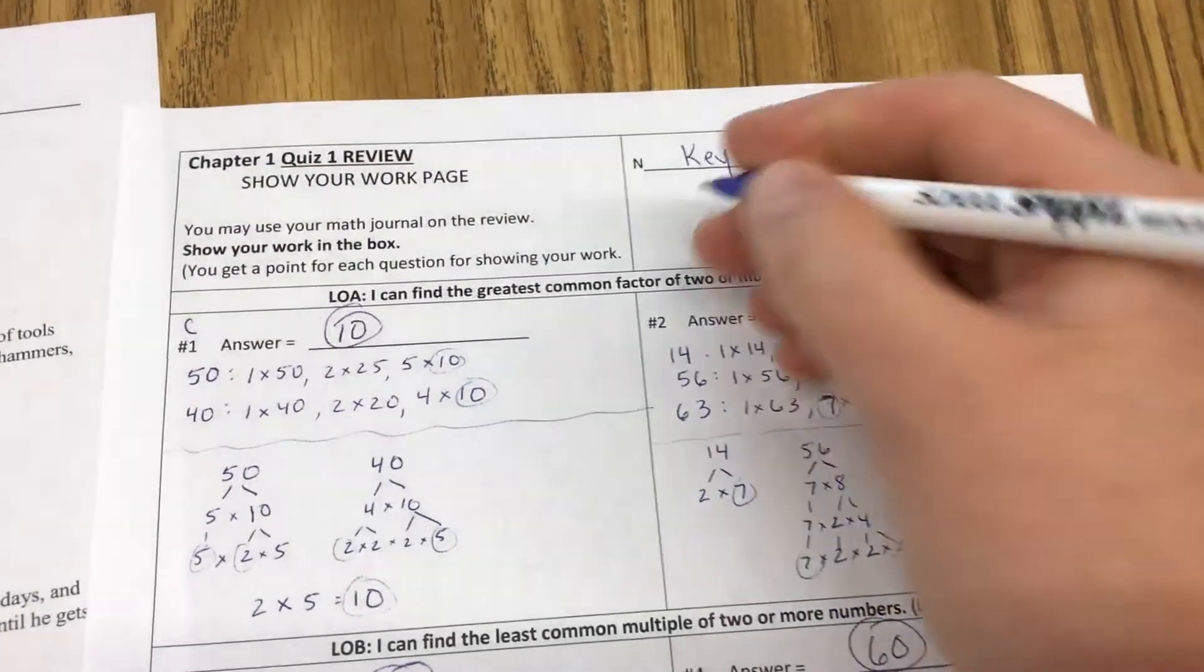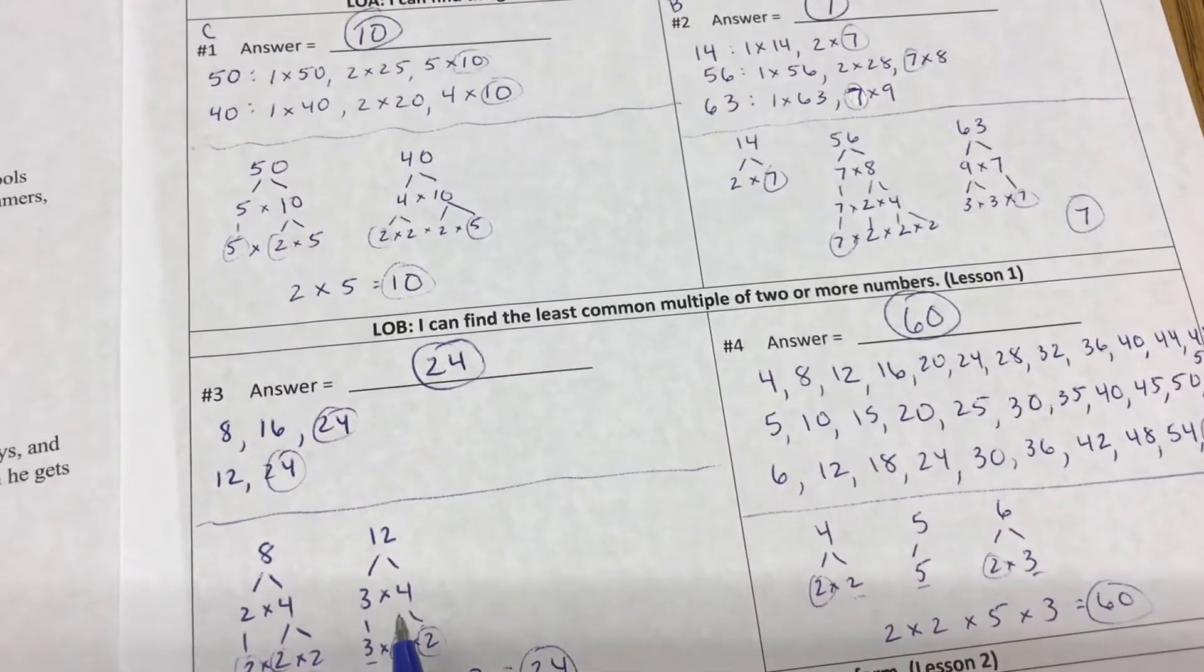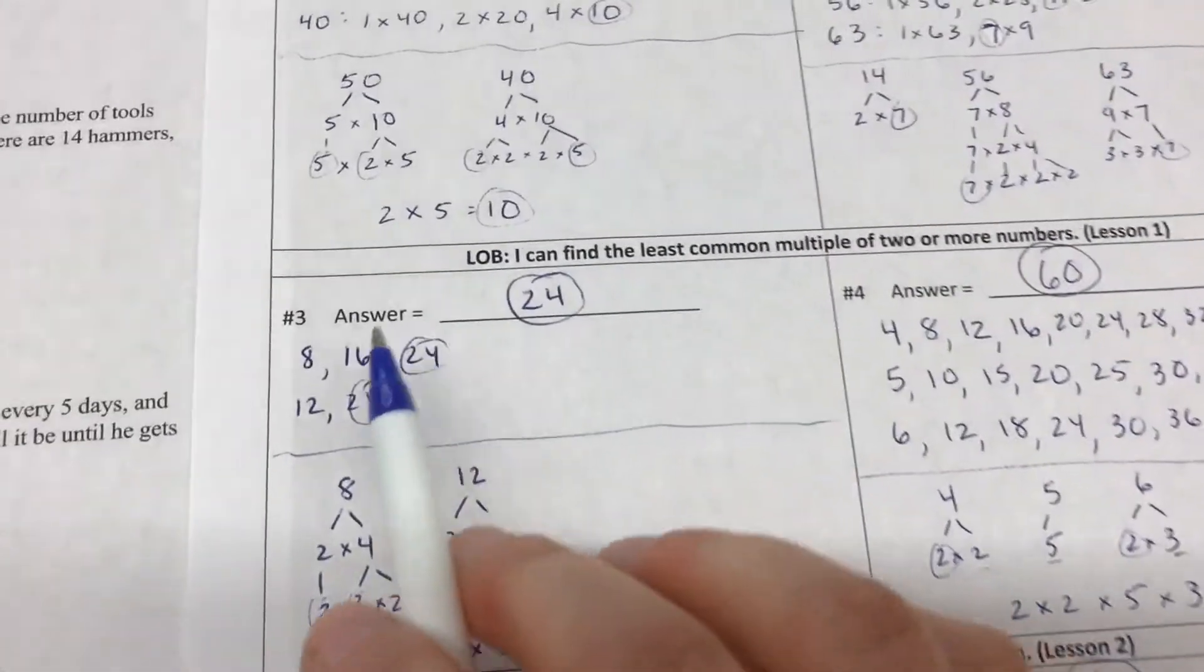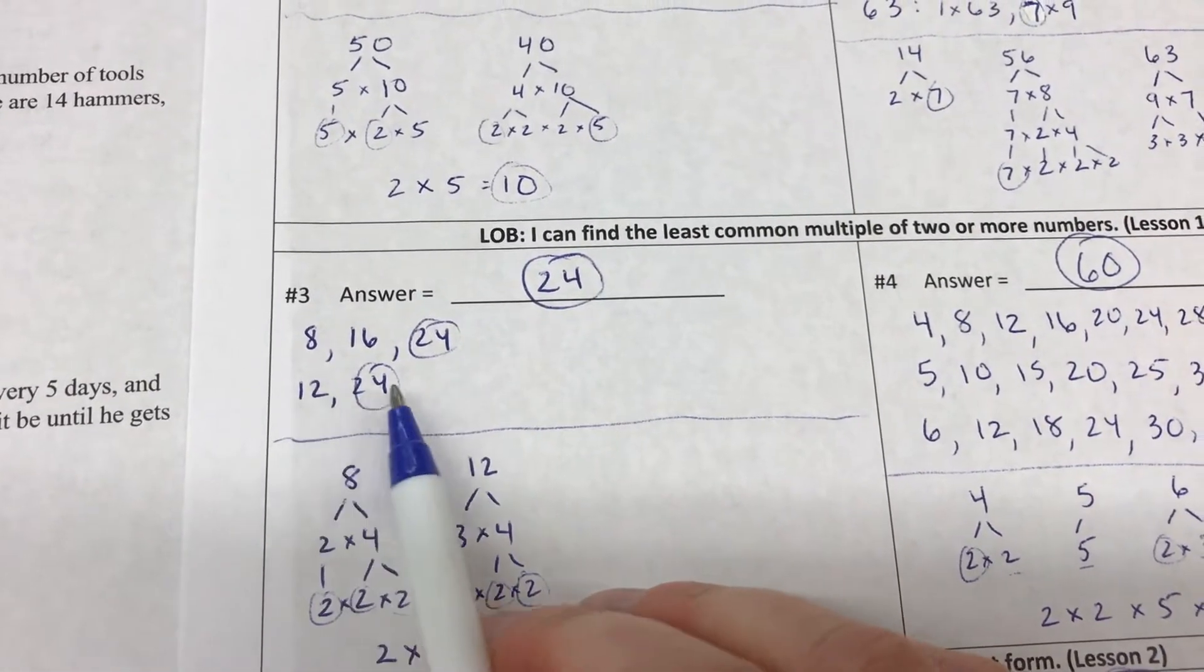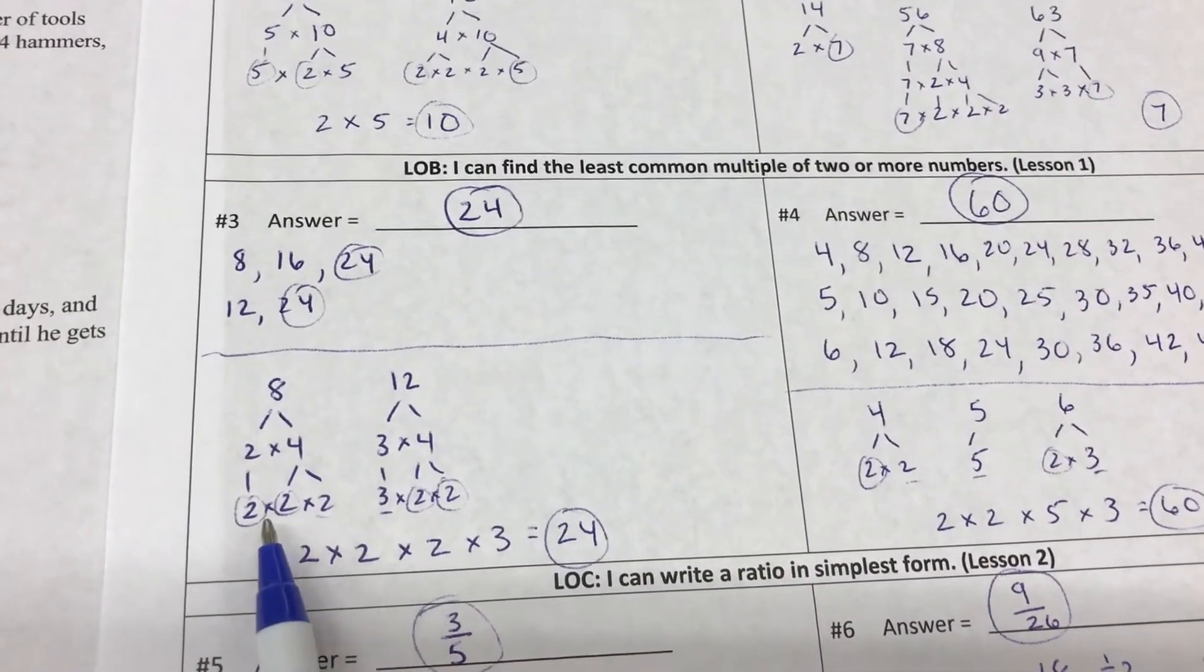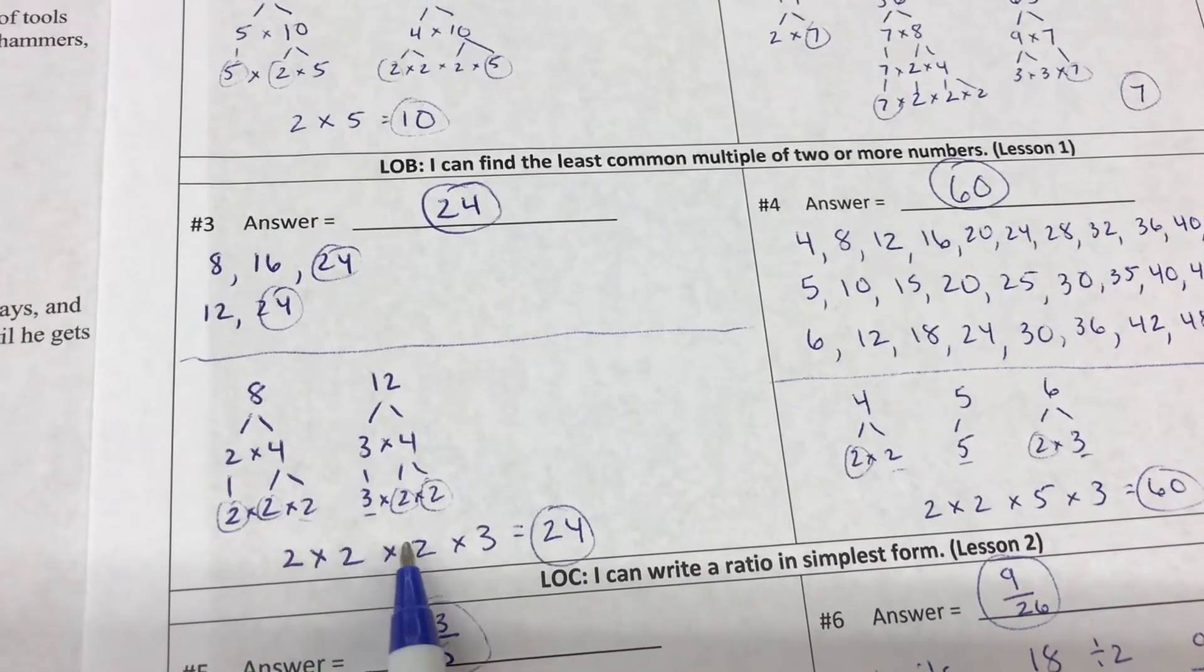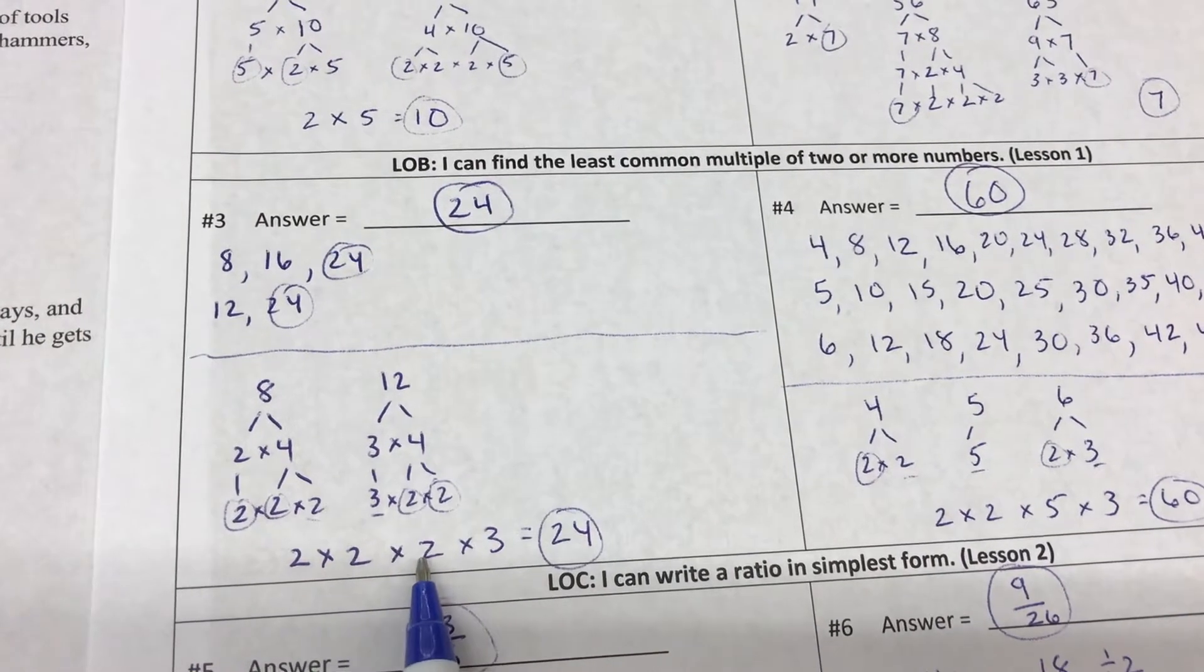For learning objective B, we're finding the least common multiple. Number 3: we needed to find the least common multiple of 8 and 12. So here are my multiples of 8, 16, 24, and multiples of 12. 24 is the smallest one. Here are my factor trees: they had two 2s in common, so I put those here, and then we also had to bring down the 2 and the 3. So 2 times 2 is 4, 4 times 2 is 8, 8 times 3 is 24.